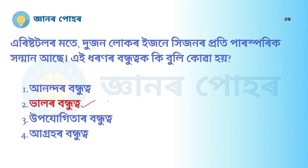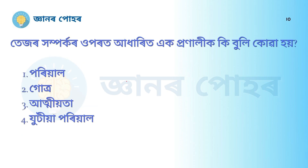The correct answer is option 2 — friendship of the good (bhalor bundhuttwa). Moving on to the final question: A system which is based on blood affinity is called what? Option 1: Family (poriyal). Option 2: Gotra. Option 3: Kinship. Option 4: Joint family. The correct answer is kinship.